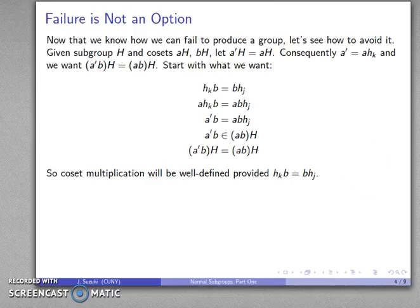So it seems that coset multiplication will be well-defined provided that for any b I can satisfy this relation: hkb = bhj.